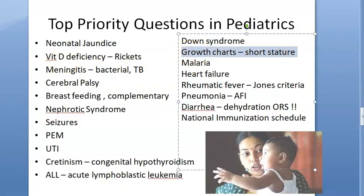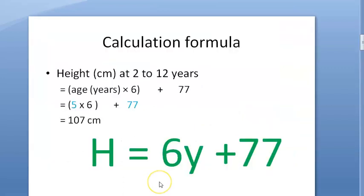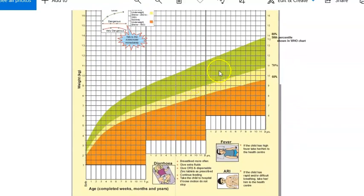Growth charts: you should know how to calculate the weight of a child for different ages. There is one formula for height: height = 6Y + 77. Based on this, you should know the expected versus actual value, plot growth charts, and determine whether the child is within the normal percentile (around the 50th) or below two or three standard deviations — which falls in the red zone.